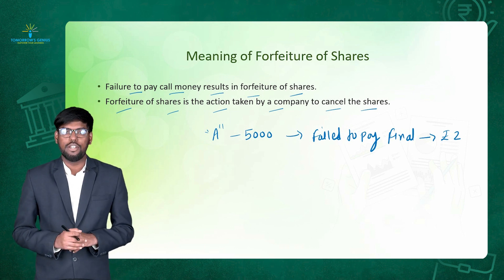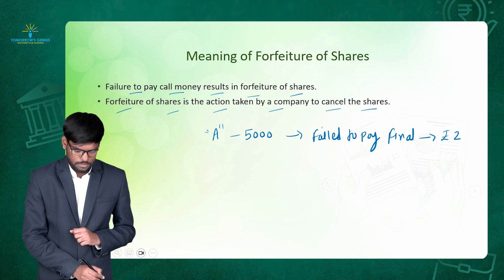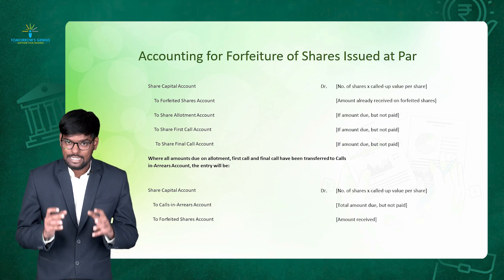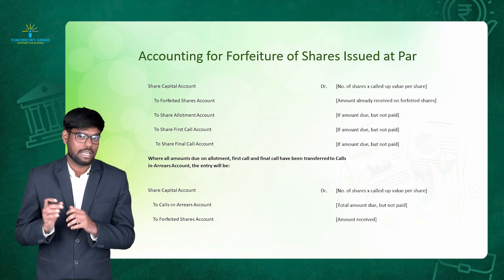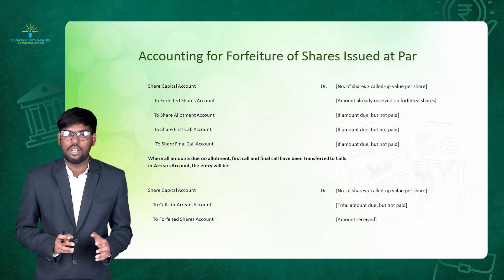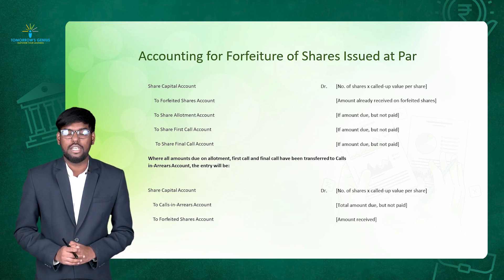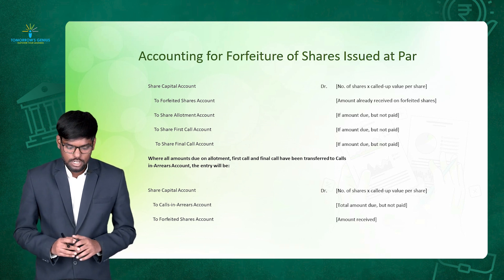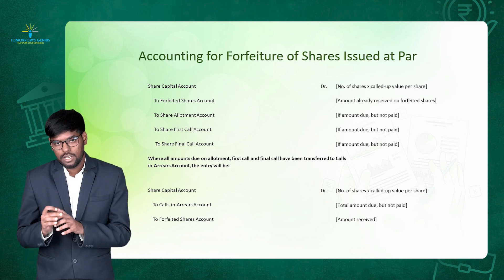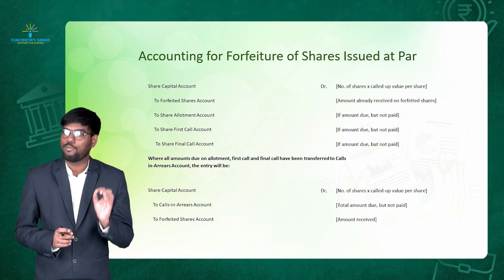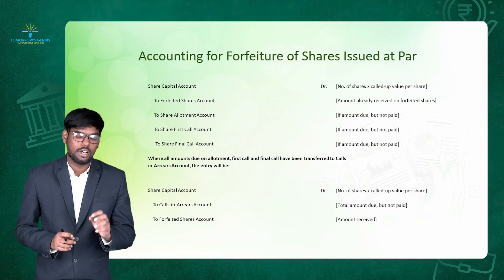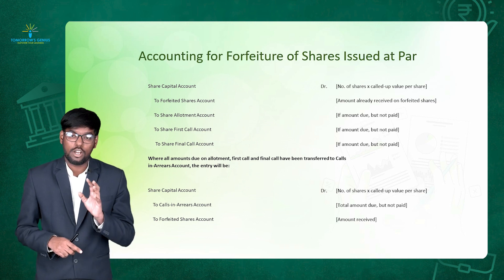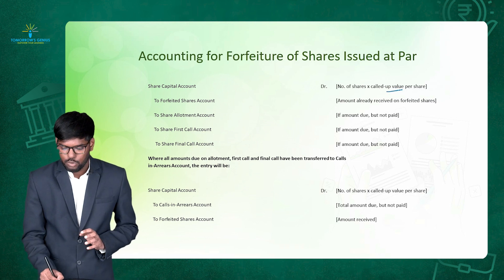Now we have to see which accounting entry we have to pass when there is a forfeiture of shares. Whenever you have to cancel the shares, you have to debit share capital account. In this example, the shareholder holding 5000 shares is unable to pay final call money of rupees 2, so we are forfeiting his holding. When you are forfeiting any holding, you debit share capital account — just as you credit share capital when issuing shares, you debit it when cancelling — for the total called up value of that share.